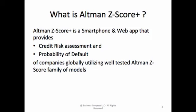What is Altman G-Score Plus? Altman G-Score Plus is a smartphone and web app that provides credit risk assessment and probability of default of companies globally, utilizing the well-tested Altman Z-Score family of models. Business Compass LLC has built this app in collaboration with Dr. Edward Altman, the inventor of Z-Score work models.